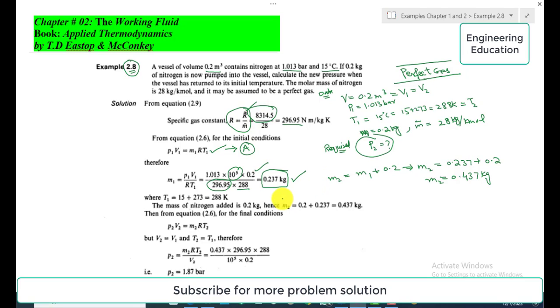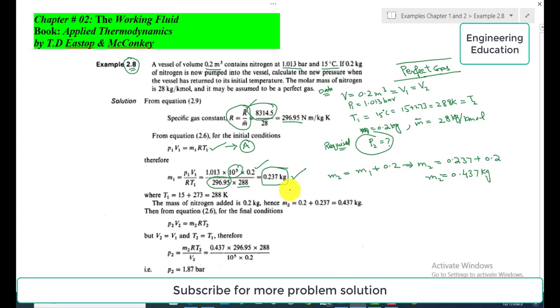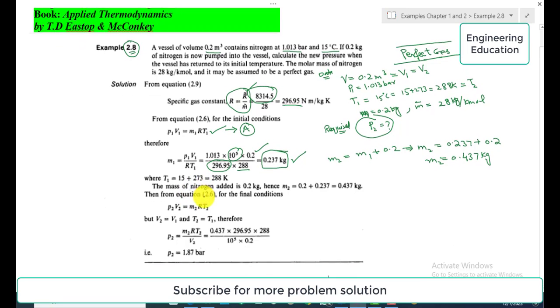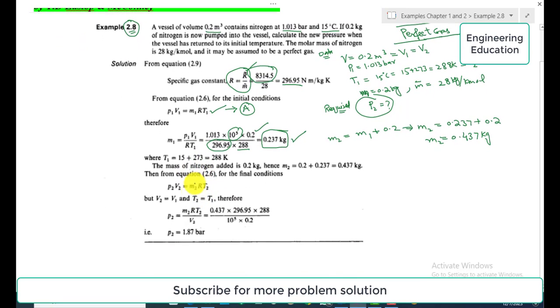Now it's very easy to find the unknown pressure P₂ at state 2 after addition of 0.2 kg of nitrogen. For state 2 we have the equation: P₂V₂ = M₂RT₂. It is already mentioned that V₂ = V₁ and T₂ = T₁.